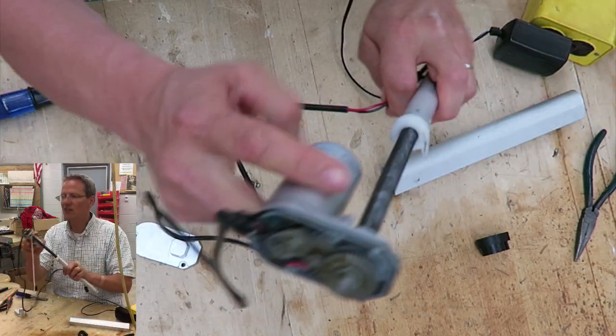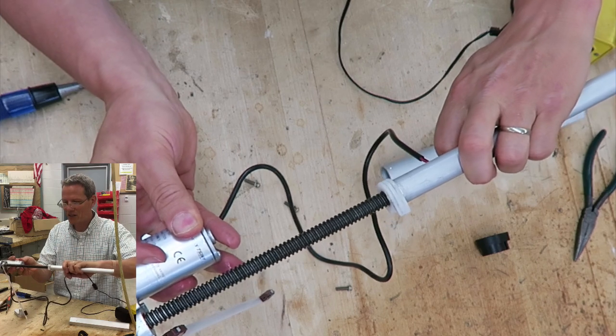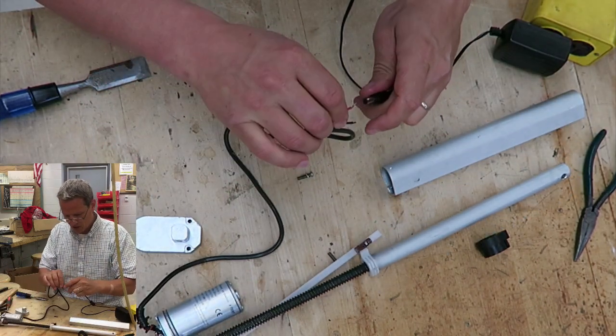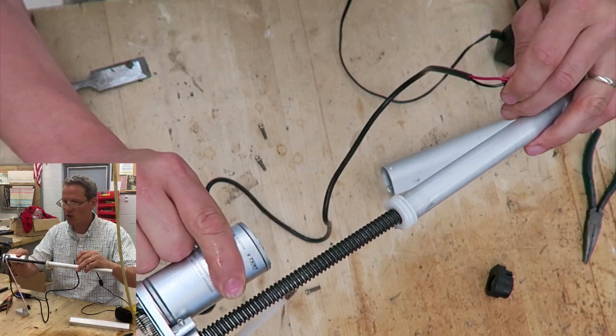And you can see the gears turning, which turns the rod, and the rod is moving away from it. If I reverse the electricity, you see the rod moving towards it.